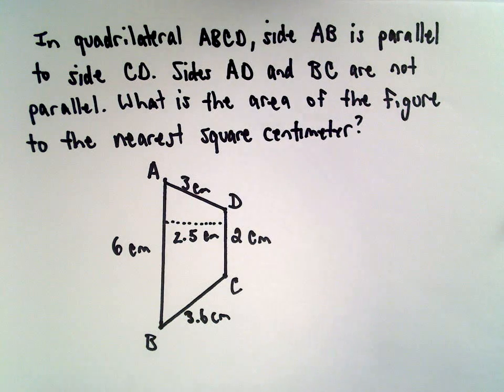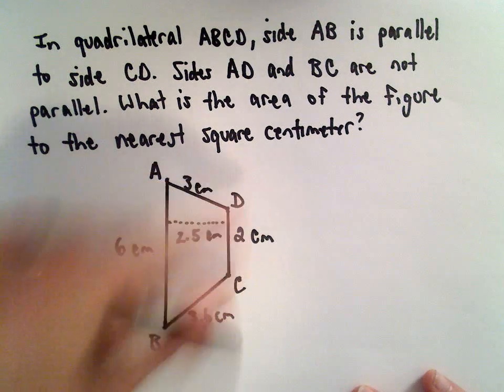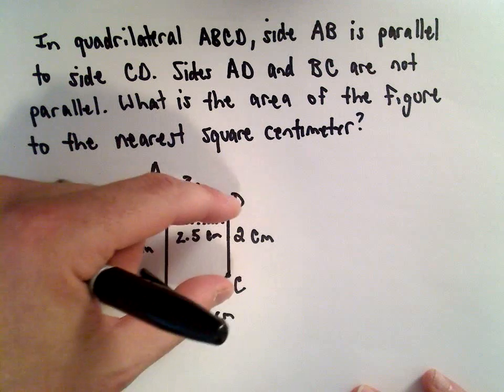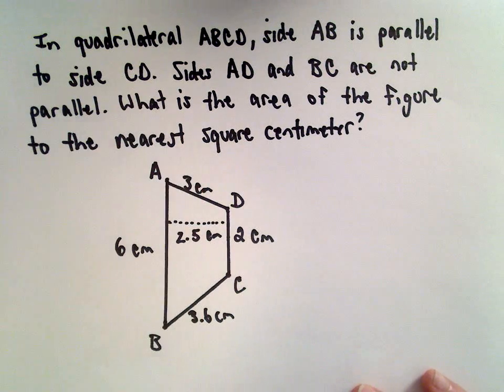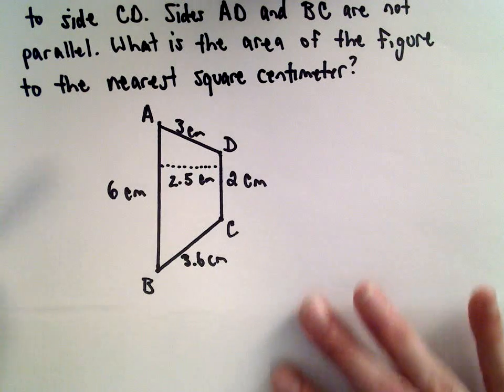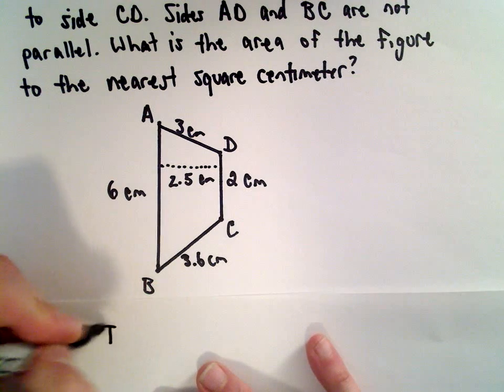So this is just one of those geometry problems. And the thing to recognize in this case is we have two sides that are parallel. Again, AB and CD. And then we have two sides that are not parallel. So in this case, that tells me that we have a trapezoid.